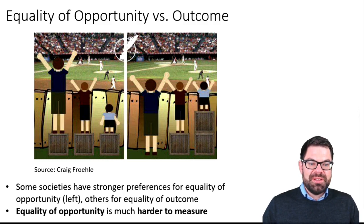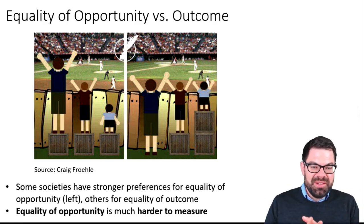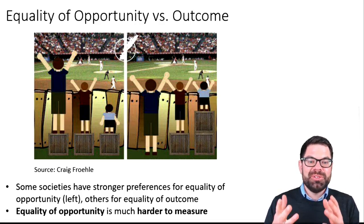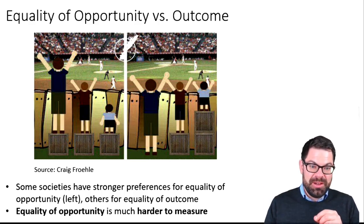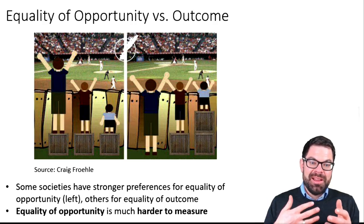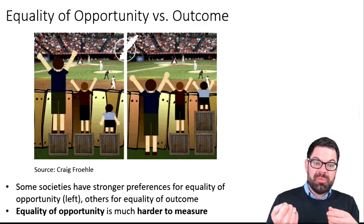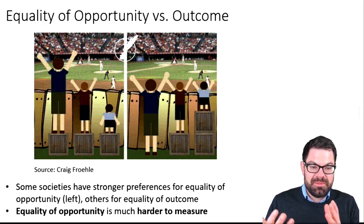Measuring equality of opportunity is very, very hard. We can measure equality of outcomes — we can measure incomes and income inequality relatively easily. But measuring equality of opportunity is difficult because we don't know what opportunities different people had. There are often wild speculations: is someone rich because they put in so much effort, or because they were just lucky? And depending on how people answer that question, it seems highly predictive of how much they favor taxation and redistribution.